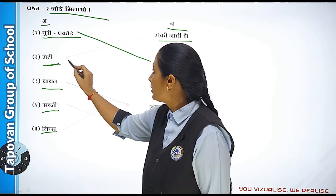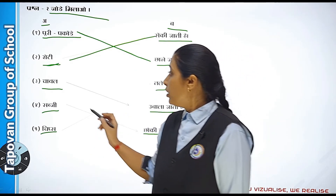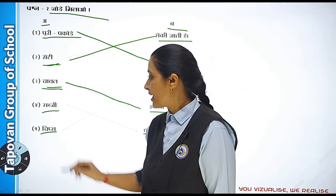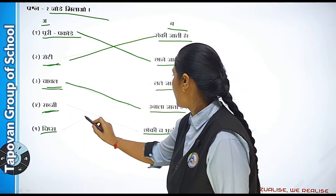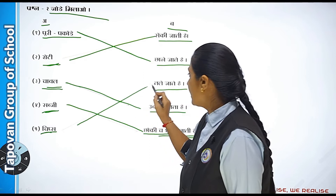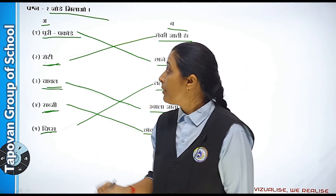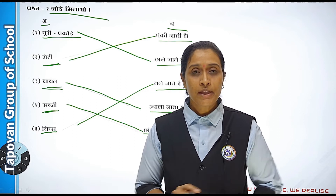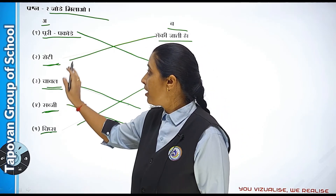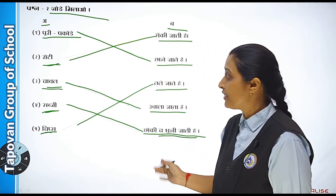Doosra hai roti — roti ko kya karoge? Roti ko 'seki jaati hai' — toh uske saamne match karna hai. Chawal — chawal ko 'ubala jaata hai' ke saamne match karna hai. Sabji — 'cheki aur bhooni jaati hai' ke saamne match karna hai. Chips — 'tale jaate hain' ke saamne match karna hai. Toh aise uske saamne match karna hai.